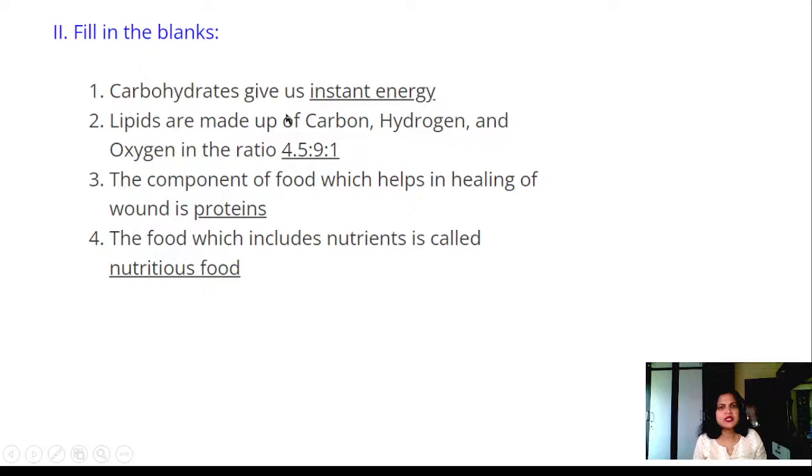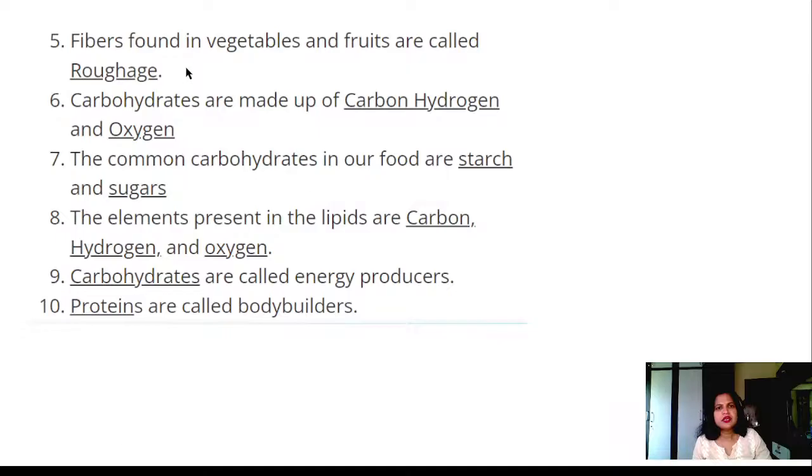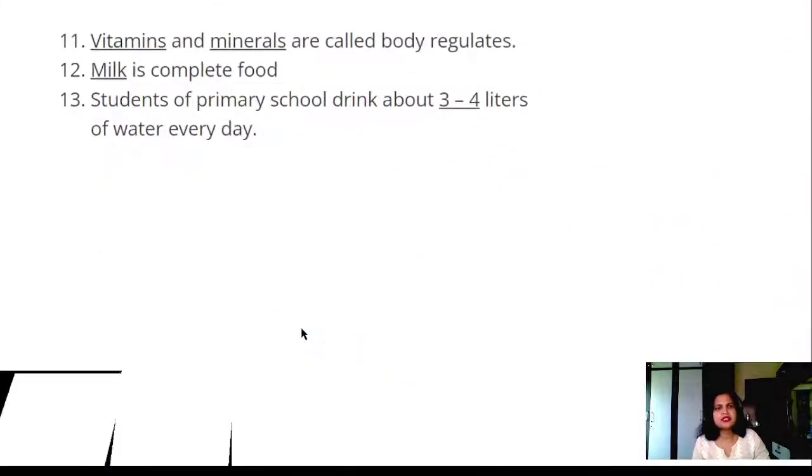Fill in the blanks. Carbohydrates give us instant energy. Lipids are made up of carbon, hydrogen, and oxygen in the ratio 4.5 to 9 to 1. The component of food which helps in the healing of bones is proteins. The food which includes the nutrients is called nutritious food. The fibers found in vegetables and foods are called roughage. Carbohydrates are made up of carbon, hydrogen, and oxygen. The common carbohydrates in our food are starch and sugars. The elements present in lipids are carbon, hydrogen, oxygen. Carbohydrates are called energy producers. Proteins are called body builders. Vitamins and minerals are called body regulators. Milk is complete food. Students of primary school drink about 3 to 4 liters of water every day.